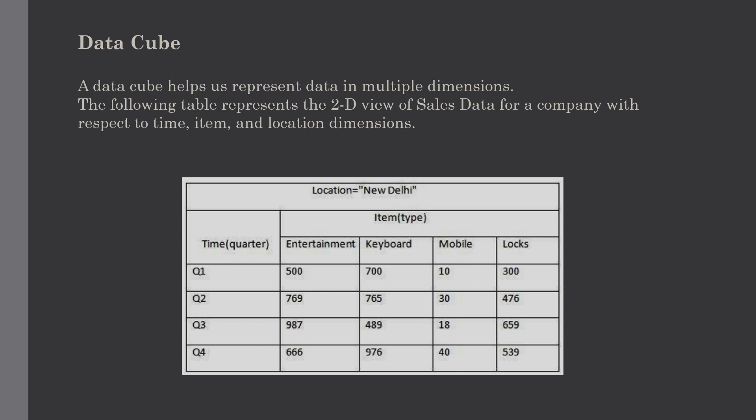Suppose a company wants to keep track of sales records with the help of a sales data warehouse with respect to time, item, branch, and location. These dimensions allow tracking of monthly sales at which branch and which items were sold. There is a table associated with each of these dimensions, known as a dimension table. For example, an item dimension table may have attributes such as item name, item type, and item brand.